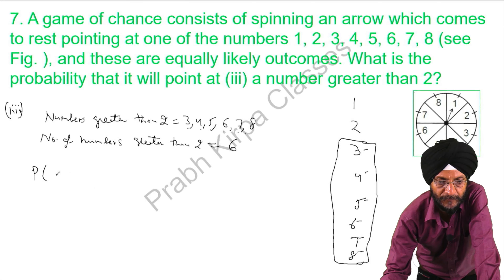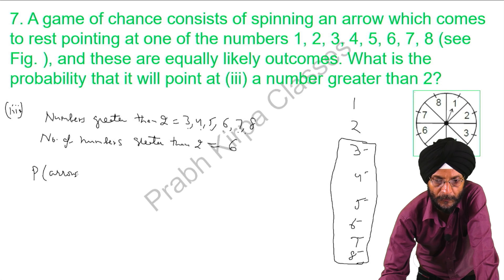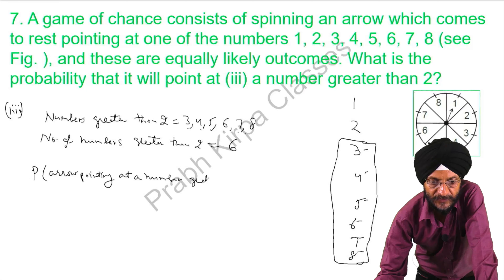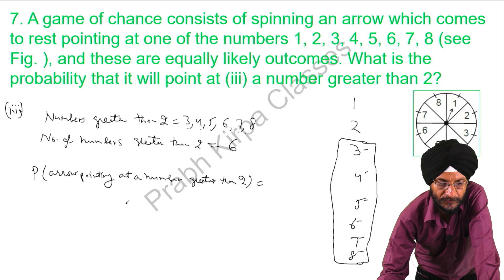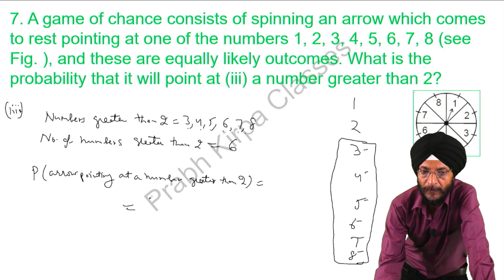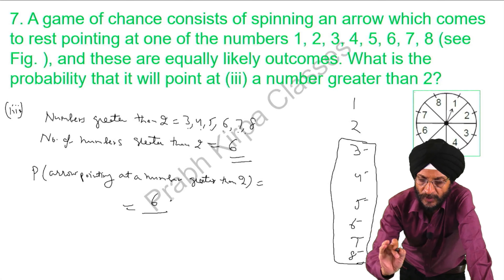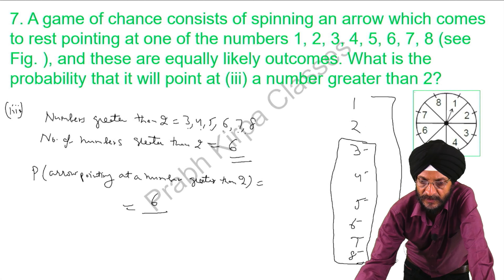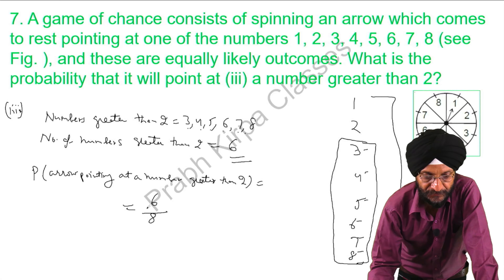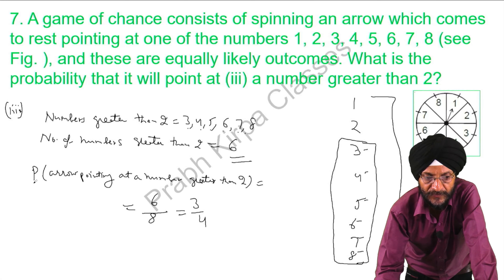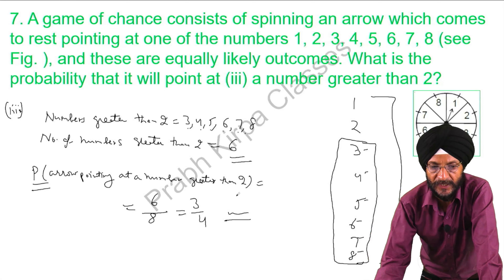The probability of the arrow pointing at a number greater than 2 equals the number of favorable outcomes (6) divided by the total number of possible outcomes (8), which gives 6 over 8. Dividing both by 2, the answer is 3 over 4.